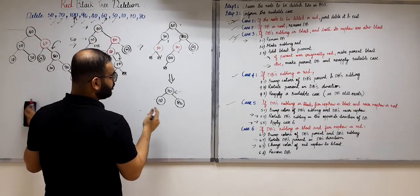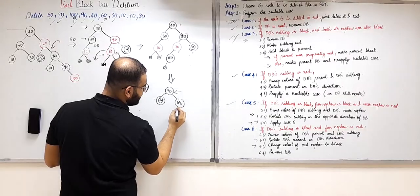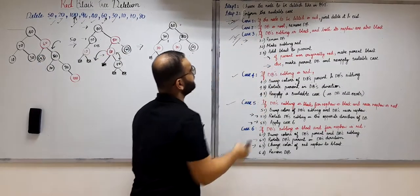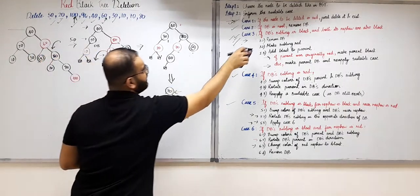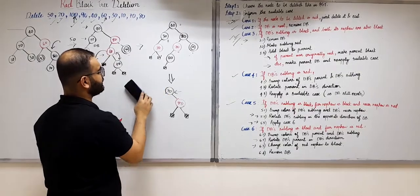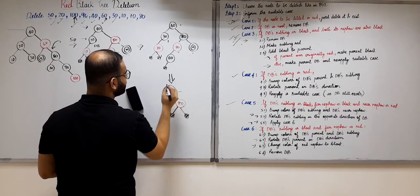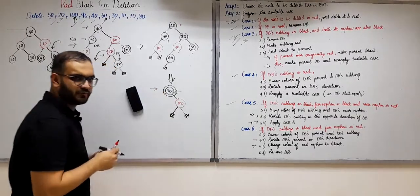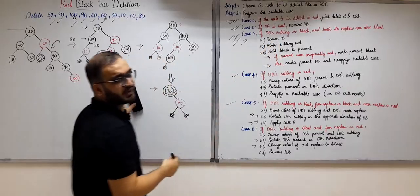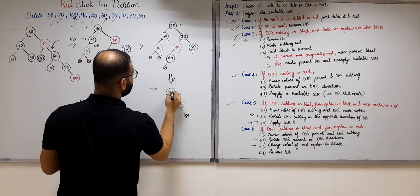The next element to be deleted is 10. Node 10 will become a double black node. The sibling of this double black is 80, which is black, and both its nephews are also black external nodes — so this falls into Case 3. We remove the double black, make the sibling 80 red, and add black to parent 70. But 70 was already black, so it becomes double black. However, this double black is now at the root, so according to Case 2 we simply remove the double black.